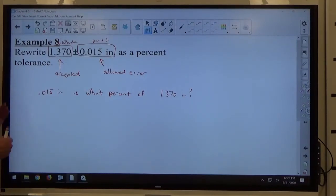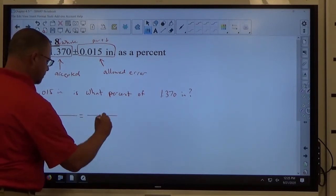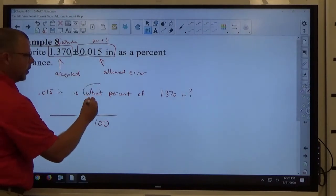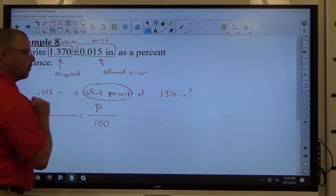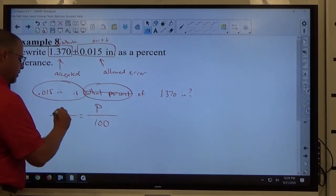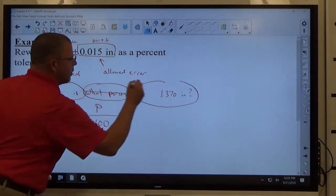We go ahead and write a percent proportion from this. We don't know the percent, so we're going to put a P for the percent over 100.